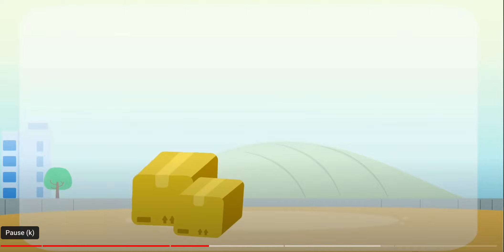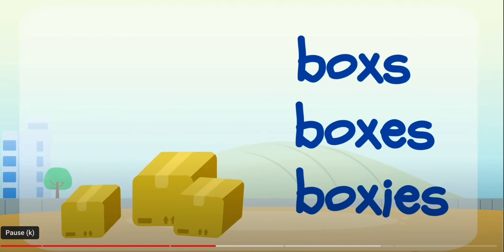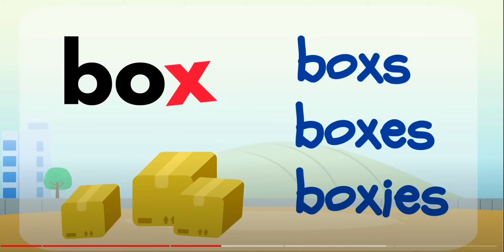Now remember the words at the beginning of this video? Boxes, boxes, boxes. Which one is spelled correctly? Box is a word that ends with an x, that hissing sound. So we're going to add es. It's boxes.